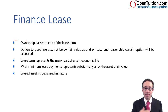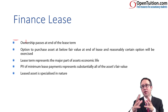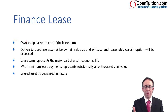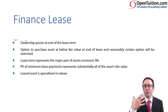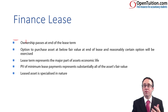The first one is that ownership passes at the end of the lease term. If at the end of the lease term the lessor transfers ownership to the lessee, then the lessee is going to have the asset for its entire life. Therefore, it's going to have all the rewards and most of the risks from using the asset. So it's no longer the lessor's asset, and we will treat it as a finance lease right from the very start.